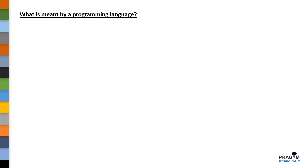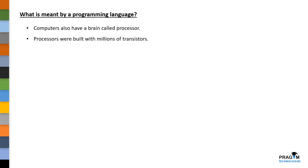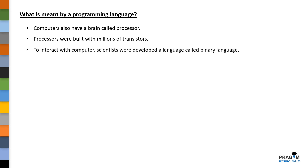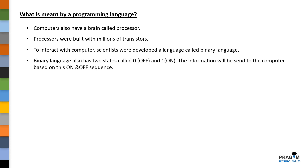Like human brains, computers do have a brain called processor. These processors are built with the help of millions of transistors, which in turn operates with the help of electric signals. When I say electric signals, we have two states called ON and OFF. To interact with computer, computer scientists developed a new language called binary language. Binary language also has two states called 0 and 1, where 0 means OFF and 1 means ON.